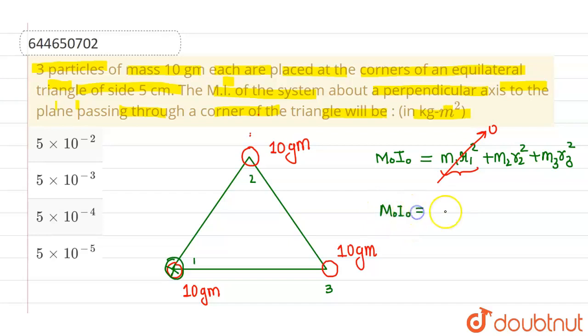So moment of inertia, mass 2 is 10 grams, so this can be written as 10/1000 in kg into r². Now since distance from axis is 5 cm, this particular distance is 5 cm and this particular distance is also 5 cm since this is equilateral triangle. So this can be written as (5/100)².